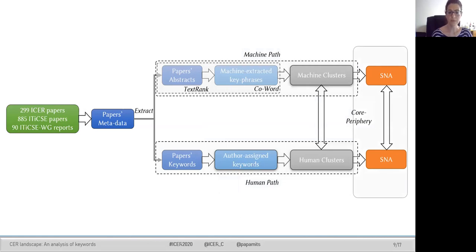Finally, from both the human-generated and machine-generated lists, we generated key-term network graphs and computed the core-periphery structure of both networks.